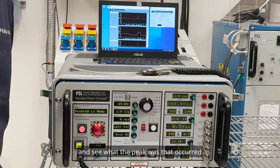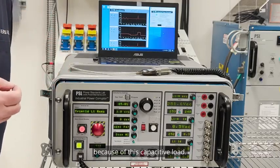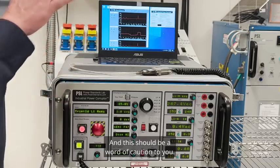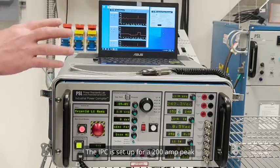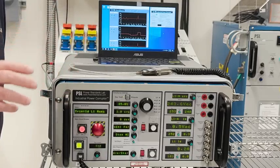Look at the curve shape and see what the peak was that occurred because of this capacitive load. And this should be a word of caution to you. The IPC is set up for a 200 amp peak in terms of inrush current.